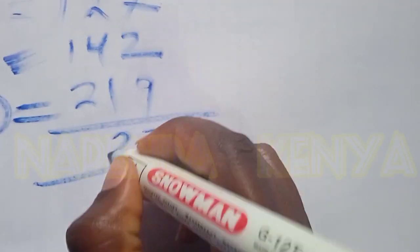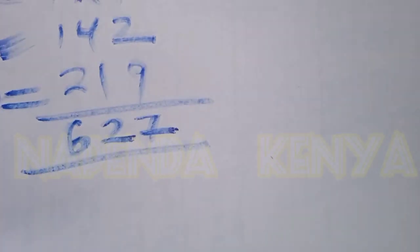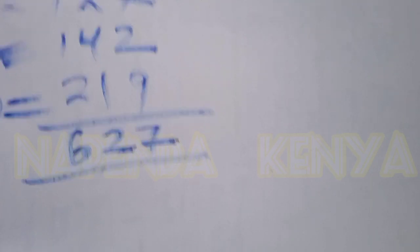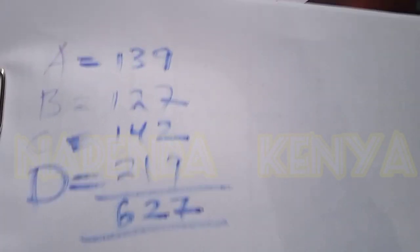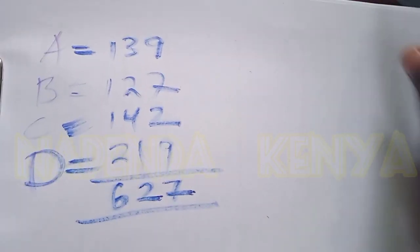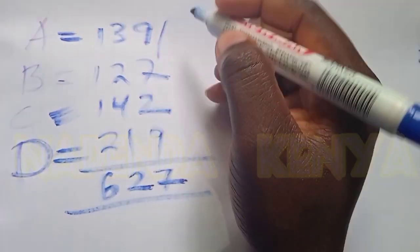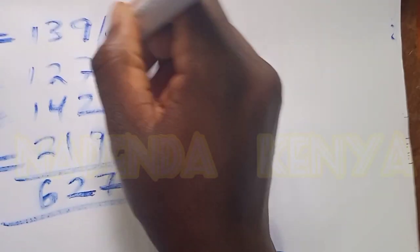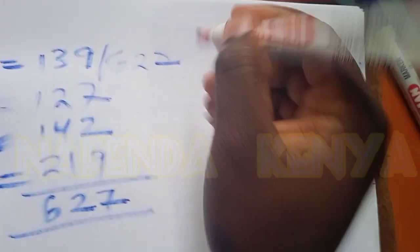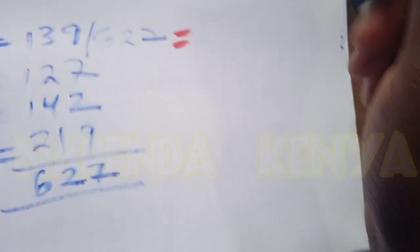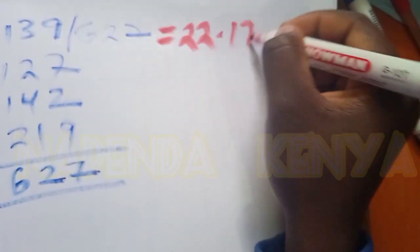Let's work with total votes at 627. So it will be 139 out of 627, that is going to give us 22.17%.